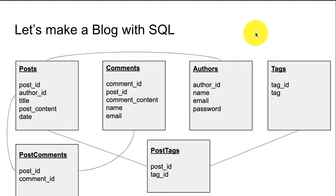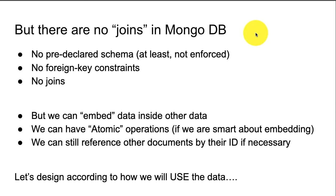So there are lots of different tables you need to join together to create your blog. But in MongoDB, there aren't really any joins. There's no pre-declared schema, which means there's nothing to really enforce how your blog is set up in terms of tables. You don't need to have specific columns as we talked about previously.